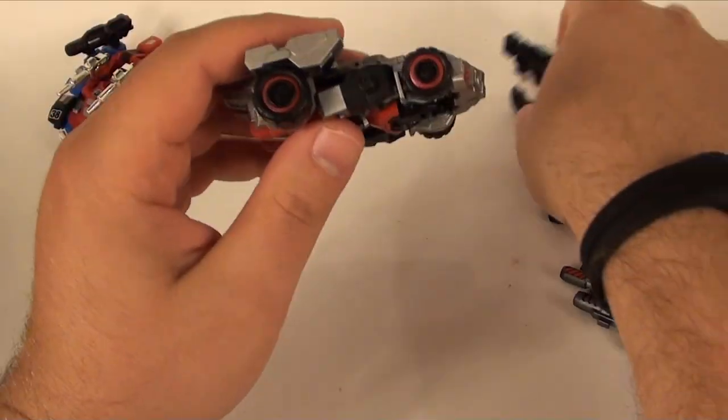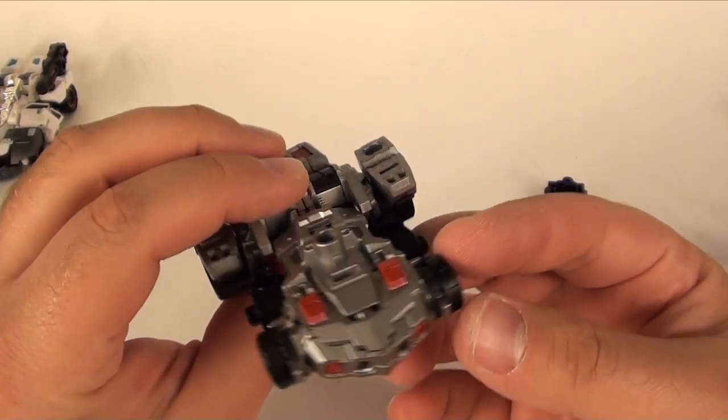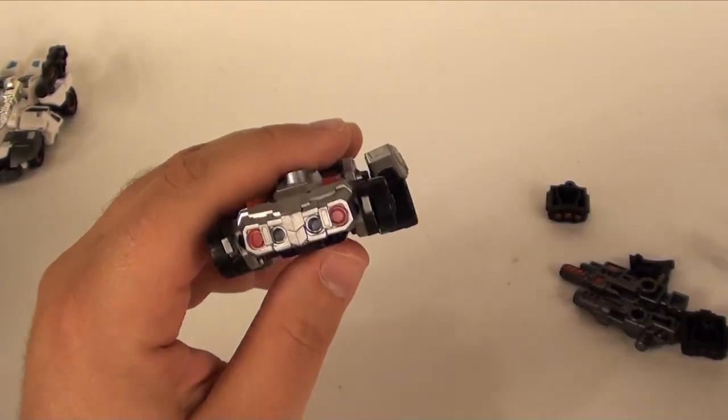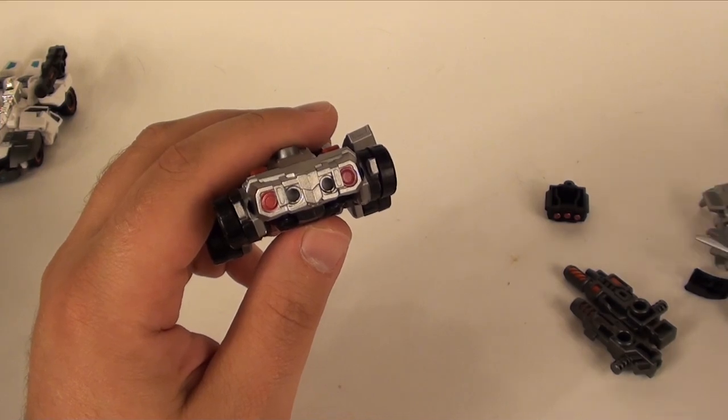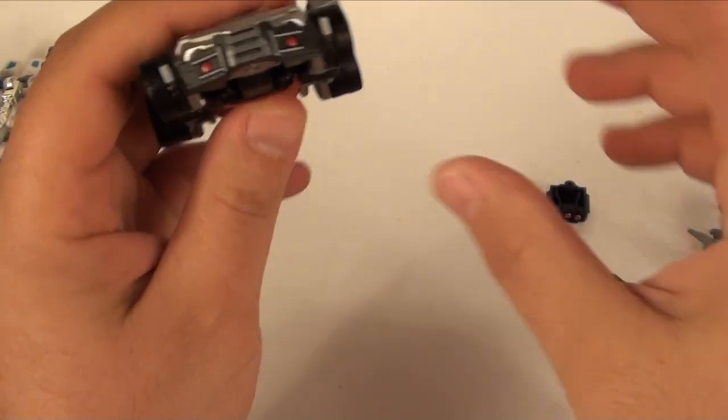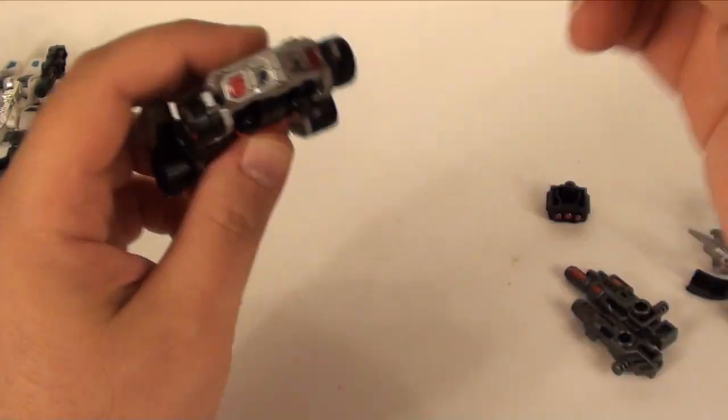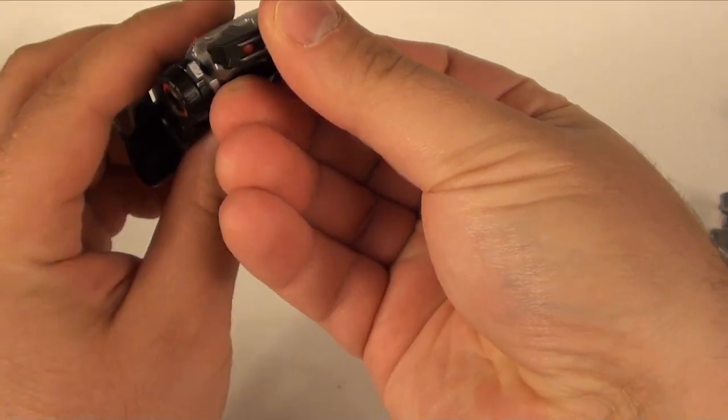All this stuff can be done with it still on, but I just want to show you the transformation to robot mode on the base form. Real quick before we do that, just so you can see, here's the bumper which I do think looks better. It only fits on there one way and I do think that looks better.